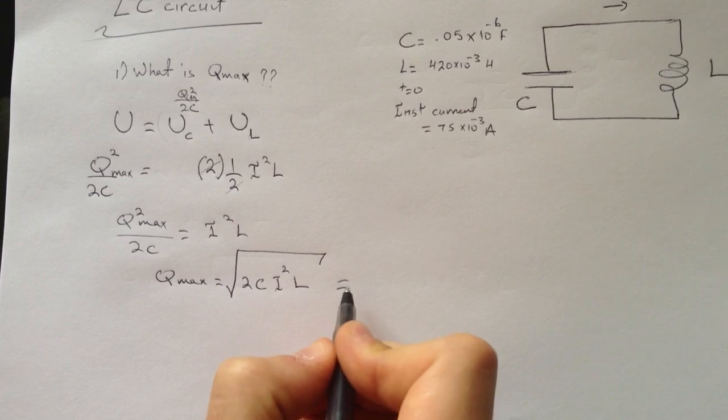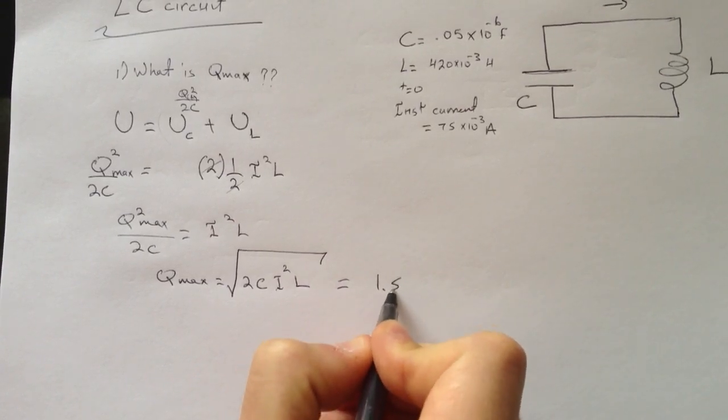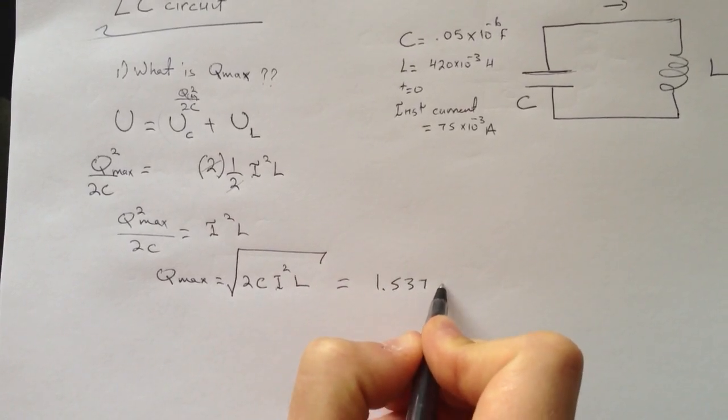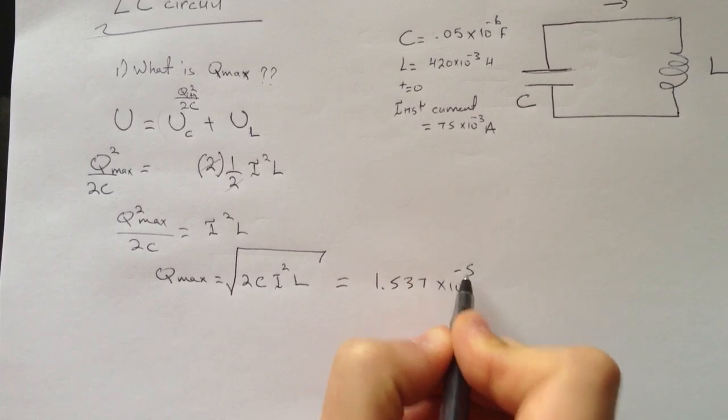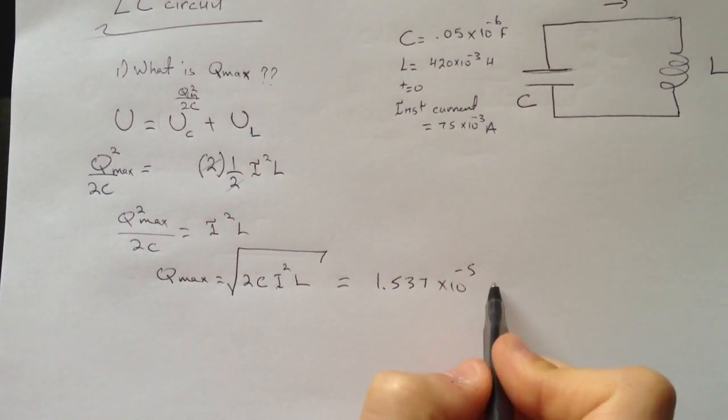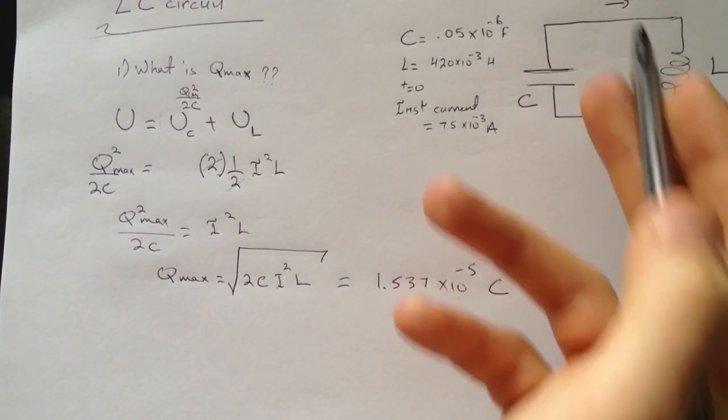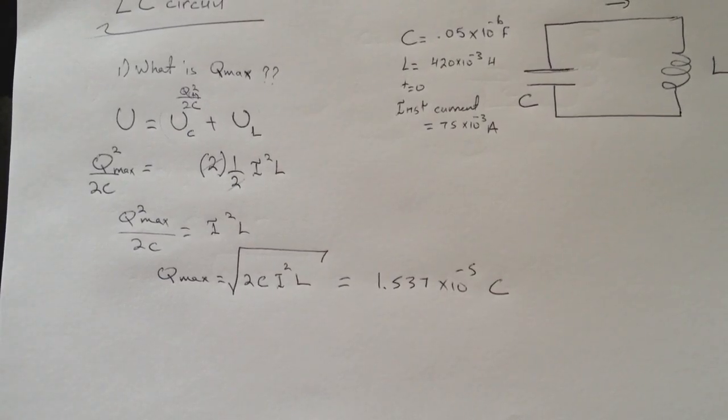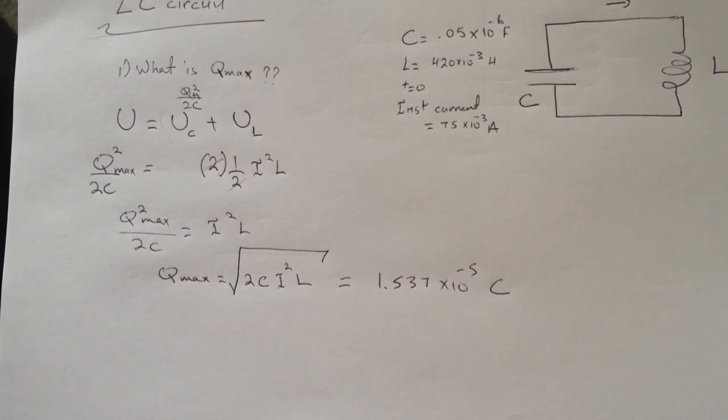My answer was 1.537 times 10 to the negative 5, just to give you an idea. This was in Coulomb because we're looking at charge. All right, I hope this helps and good luck.